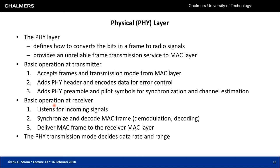At the receiver, the physical layer listens for incoming signals. Upon detecting a physical layer preamble, it synchronizes and decodes the MAC frame — demodulating the signal and using forward error correction code decoding to detect and correct as many errors as possible. For 802.11p, a convolutional code is used. After decoding, the MAC frame is delivered to the receiver MAC layer. Note that it is the MAC layer, not the physical layer, that makes the decision to discard frames with detected errors.